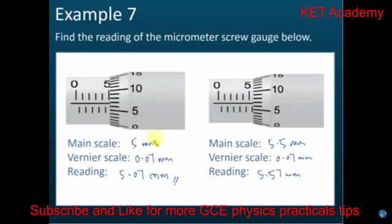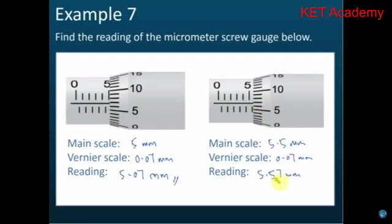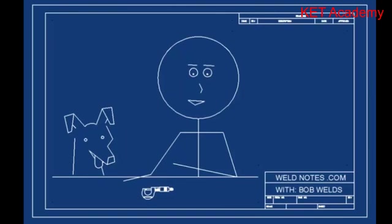Therefore the reading is 5.57mm. I show this example because many students make a mistake - they sometimes do not see this line here. So they say the main scale is 5.0, then add 0.07, getting 5.07mm. That's not correct. You must be careful about the second scale here - the 0.5. This is how to read a metric micrometer.